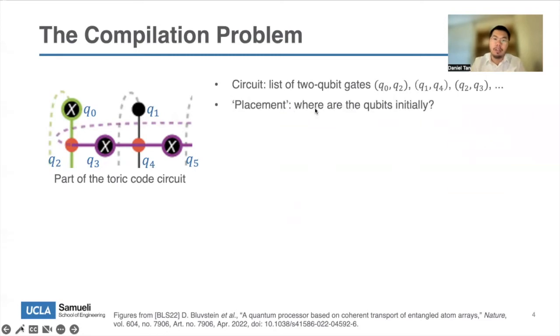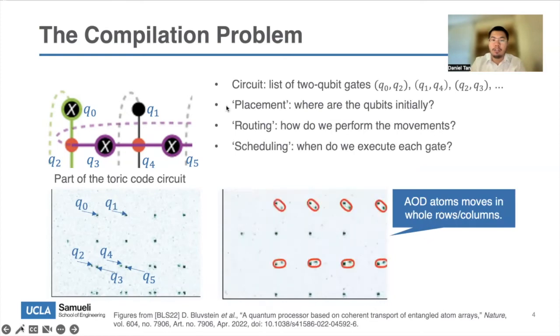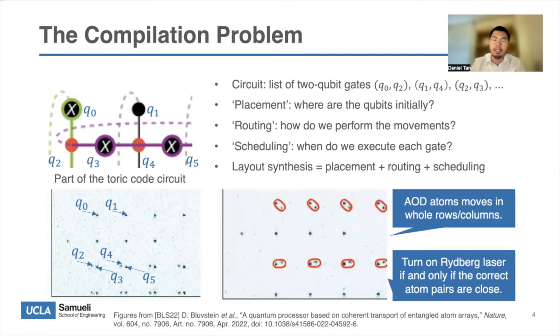So, the first issue is placing. Where are these qubits initially? So, this is the initial configuration in that view, and the locations of the six qubits are indicated by the arrows. Also, we need to choose to which trap we put them, AOD or SLM. The second part is routing. How do we perform the movements? We can perform this linear motion, but in 2D plane on these AOD traps. And the third issue is scheduling of the gates. Because the gates can only be executed when the correct qubit pairs are closed. So, layout synthesis or qubit mapping, these terms are used interchangeably in the literature, just means that we need to give this answer to all these questions.